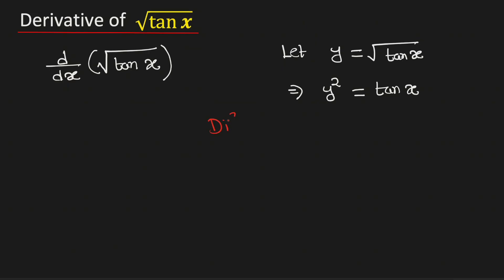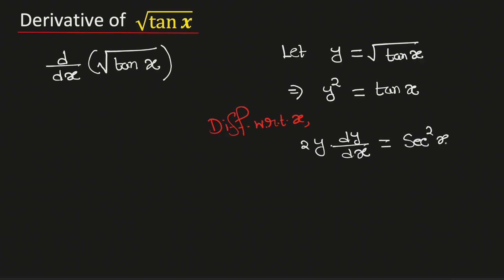Now differentiate both sides with respect to x. The derivative of y squared is 2y times the derivative of y, which is dy/dx. And the derivative of tan x with respect to x is sec squared x. So from here we get that dy/dx is equal to sec squared x divided by 2y.